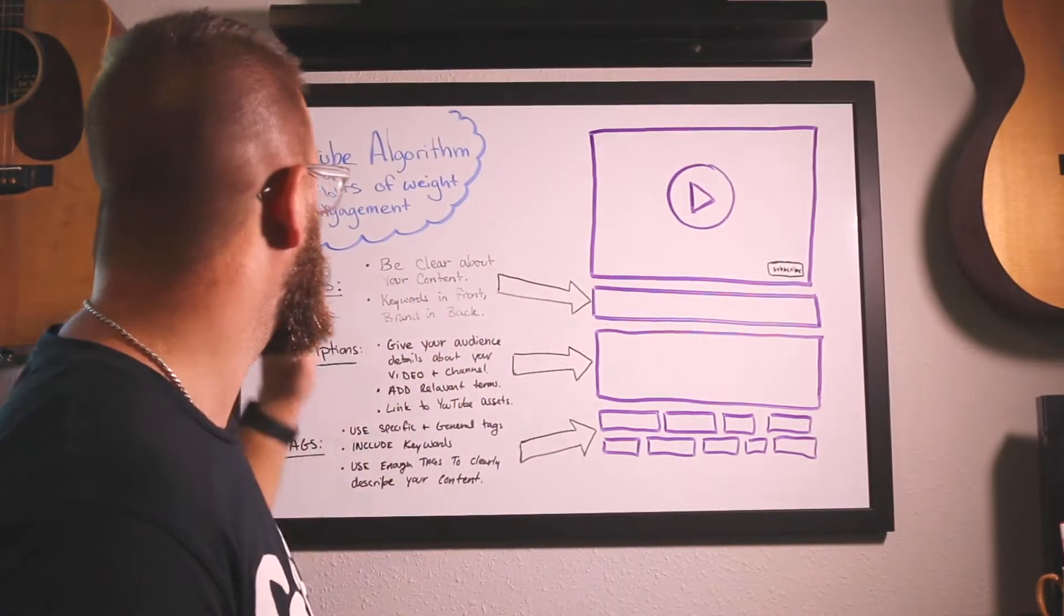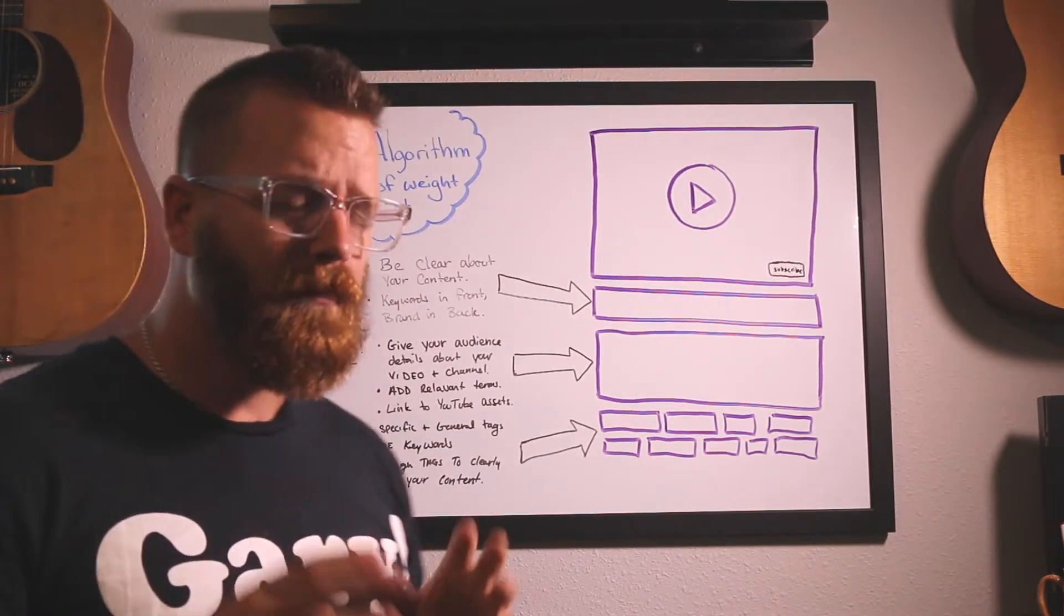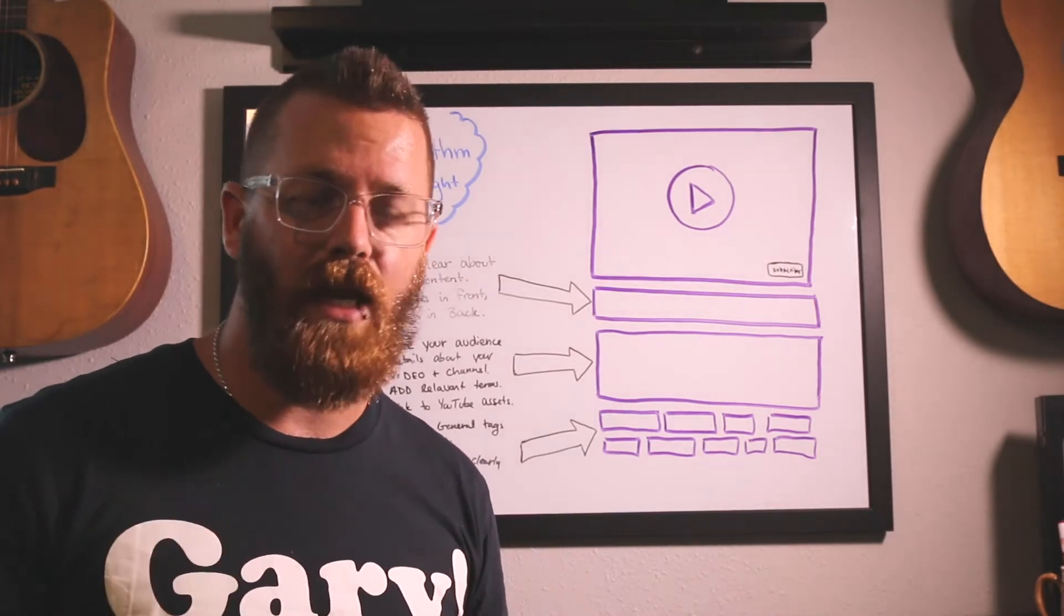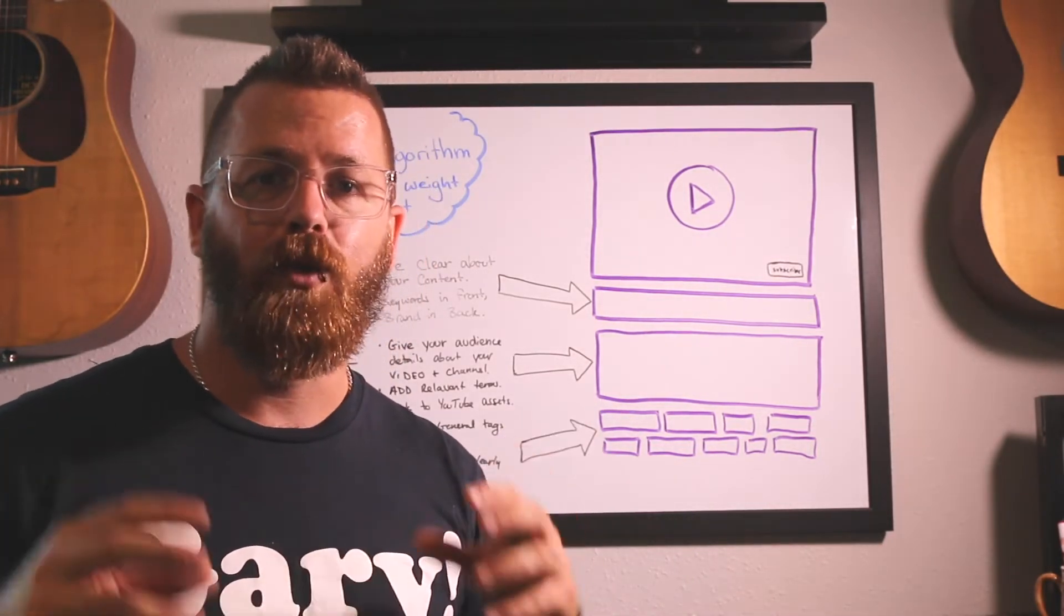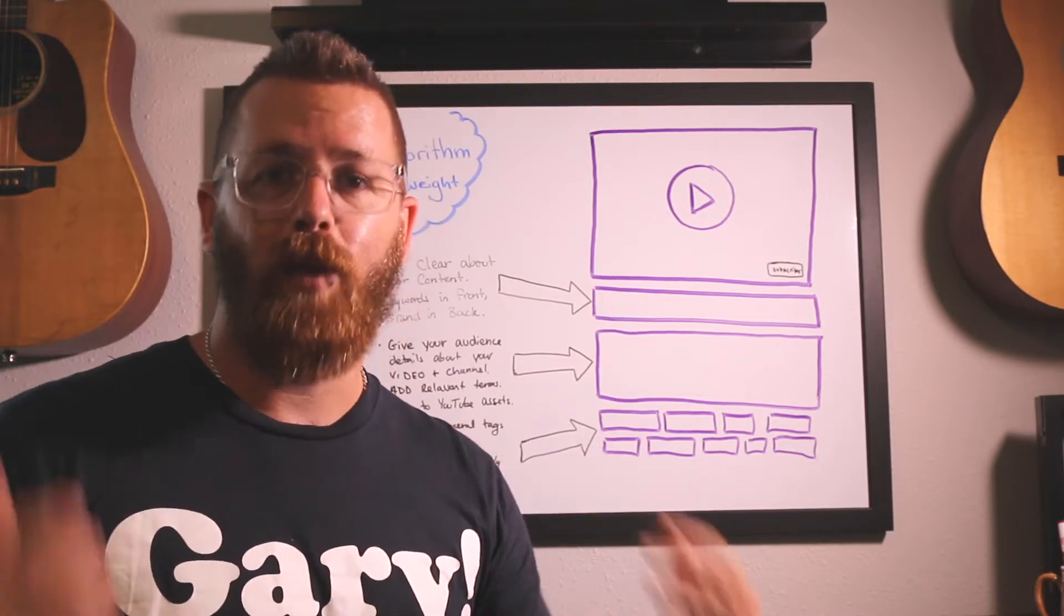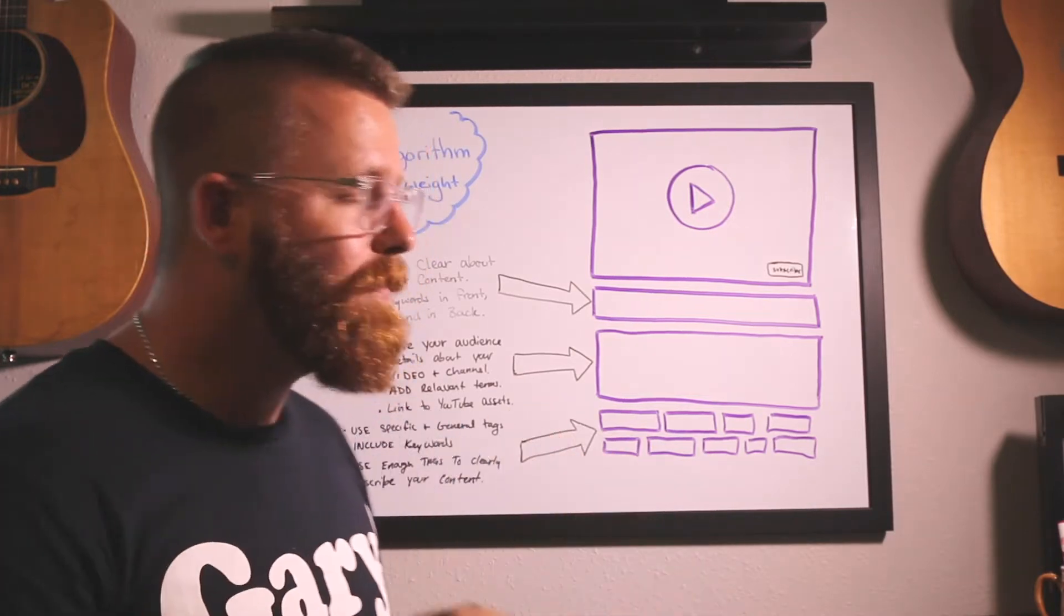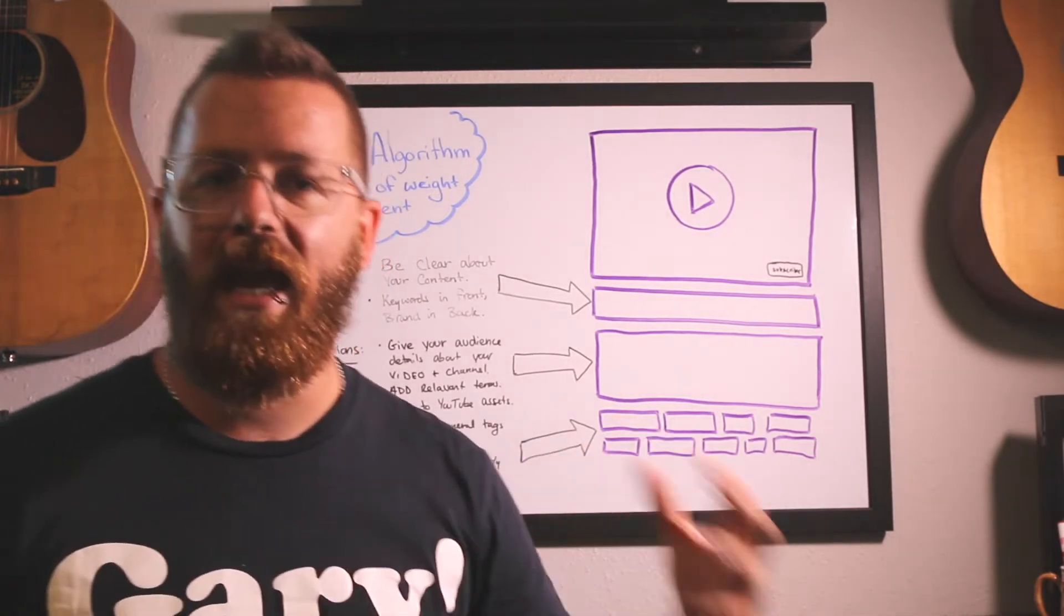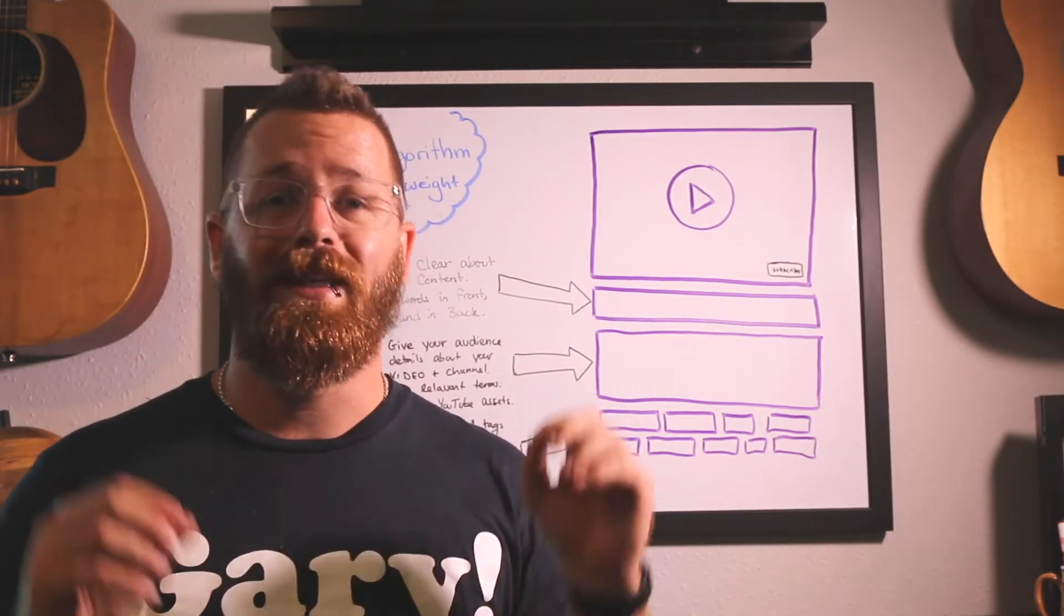So unlike traditional search, YouTube's algorithm places a lot of weight on the engagement of that specific type of media. YouTube wants people to engage with your video and stay on the YouTube platform. So Google will track people as they click on a website and if that website has Google Analytics, they can track user behavior and understand what people are doing once they get to your website.